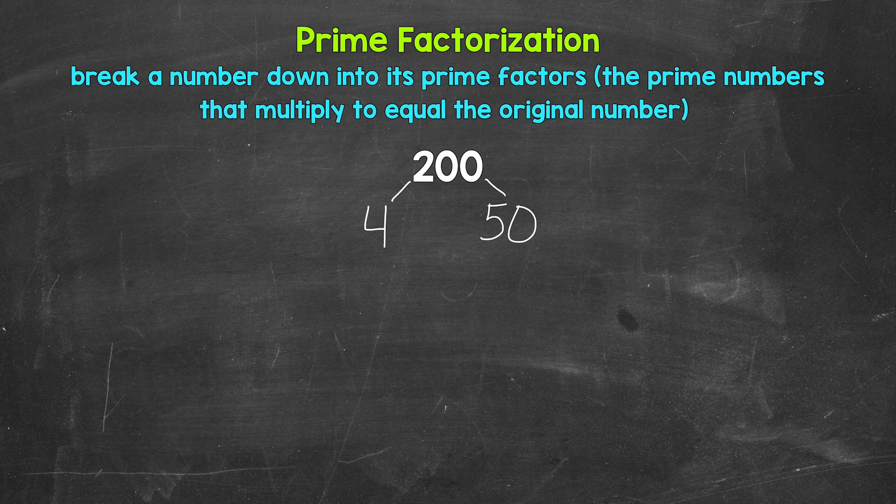Now keep in mind, there are other factors we could have started with here. For example, 2 and 100, and there are other options as well. These will all work. Depending on the number, there can be multiple different factors that we can use. But in the end, we will get to the same prime numbers, and that's what's important.